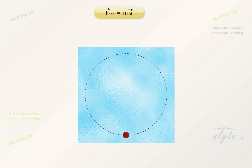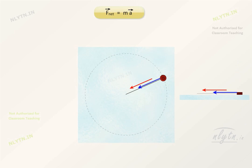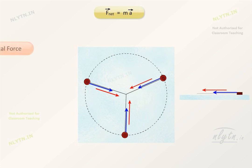If we take an example of a puck tied to a string moving in uniform circular motion on a frictionless surface, the free body diagram of the puck will have its weight and the normal reaction from the surface. But both these forces are perpendicular to the plane of motion, and forces perpendicular to the plane of motion cannot alter the motion, so they cannot be the reason for the centripetal acceleration. However, the tension in the string is the only force in the plane of motion and thus should be responsible for the centripetal acceleration. This force is directed towards the centre of the circle at every point and hence is called the centripetal force.